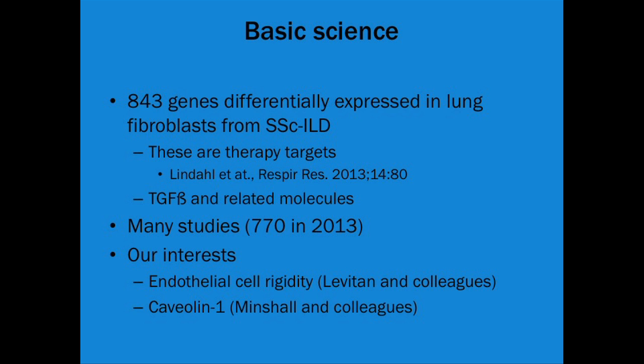In the basic science area, there's a lot of exciting things happening. When I searched scleroderma with basic science, we had 770 hits. It might not help you today, but as Roberto said, this is how we get our ideas — those different pathways are going to lead to new treatments and new trials. One key study found that 843 different genes were expressed differently in patients with scleroderma compared to normal. Many of them were related to TGF-beta and inflammation — areas where we can look for new treatments.